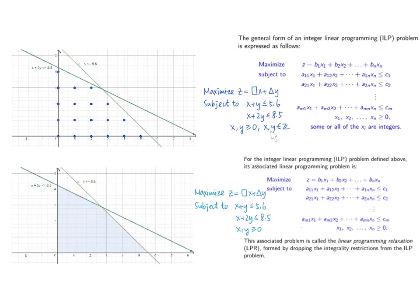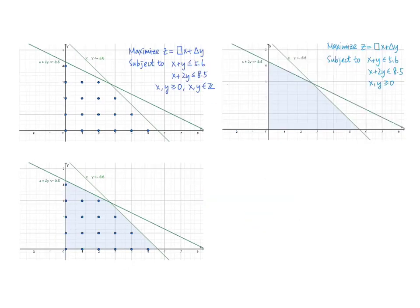The collection of all these blue dots is the feasible set of this pure integer programming problem. Removing the restriction that x and y are integers gives the LP relaxation. The shaded part represents the feasible set of the LP relaxation. Since the ILP problem has additional restrictions on top of the LP relaxation, the feasible set of the ILP is a subset, as shown in the third graph.